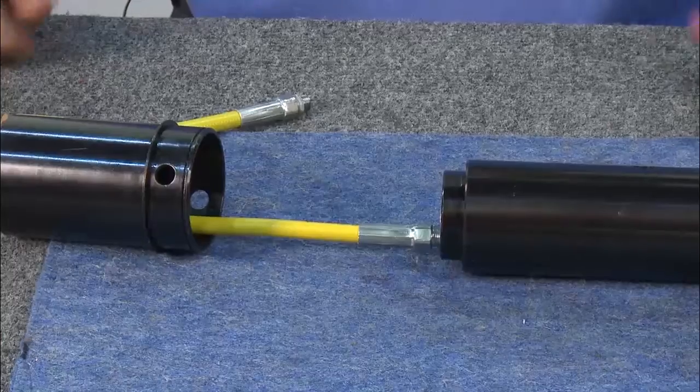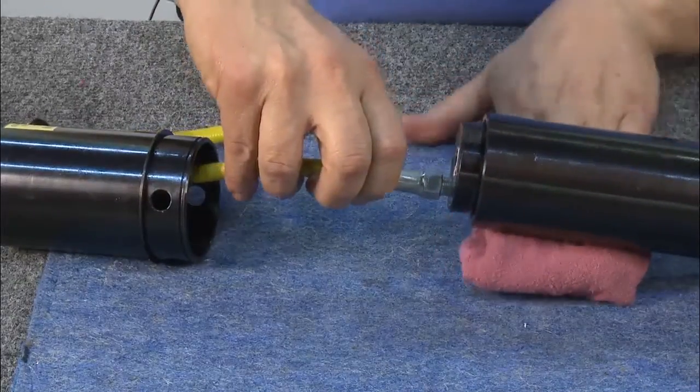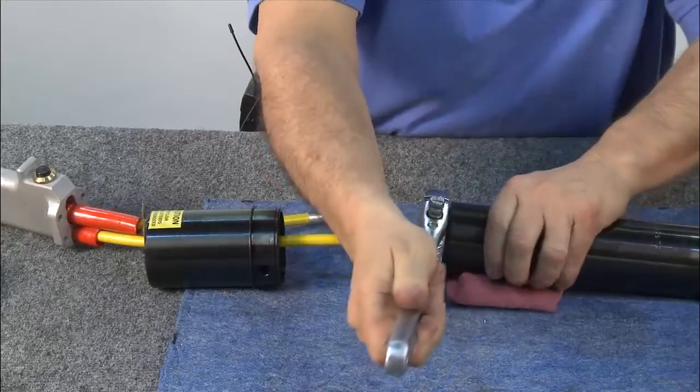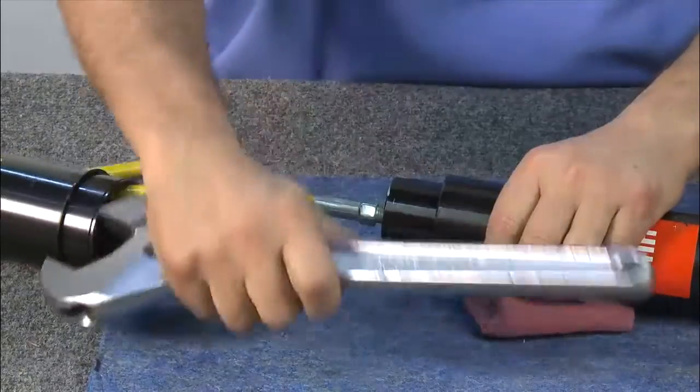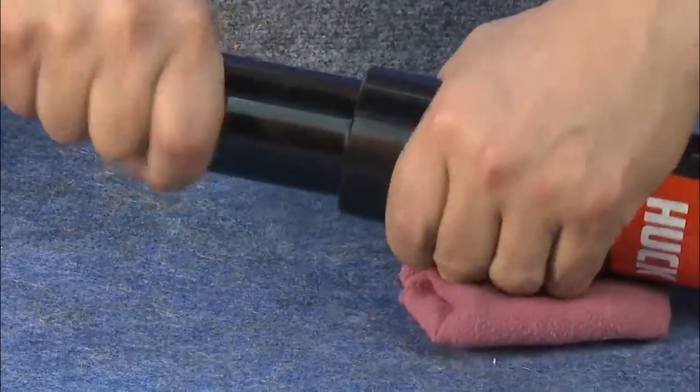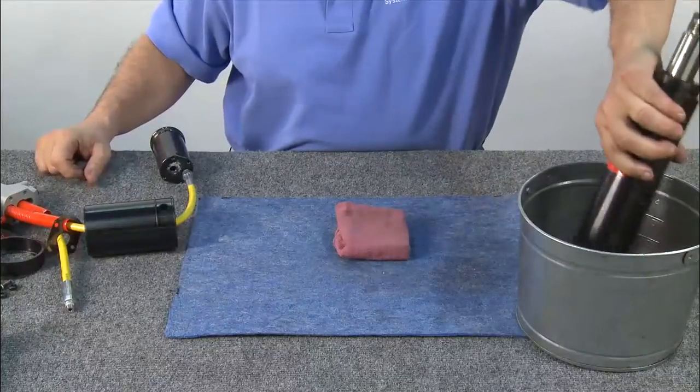Now you're ready to remove the rear piston. Using a rag to help position the tool facing upward, use a large wrench to loosen and remove the rear piston. Empty any oil that may be in the rear of the cylinder.